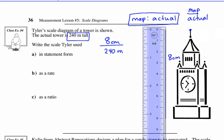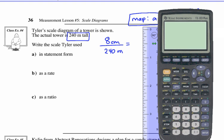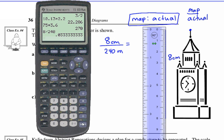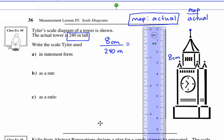We should always reduce our fraction. Take your calculator and go 8 divided by 240 — press math, enter, enter — and it's 1 over 30. So 1 centimeter on the drawing is 30 meters in actuality.